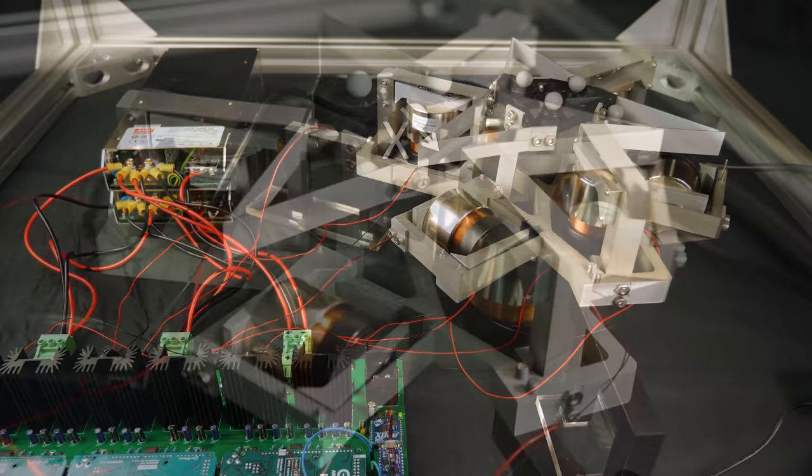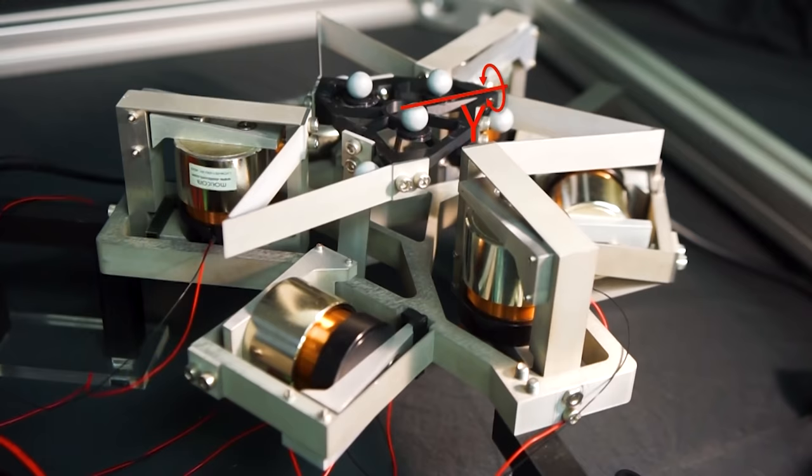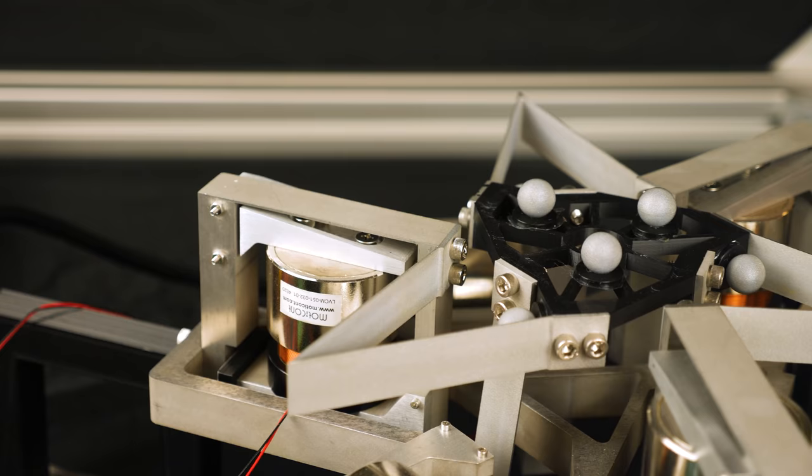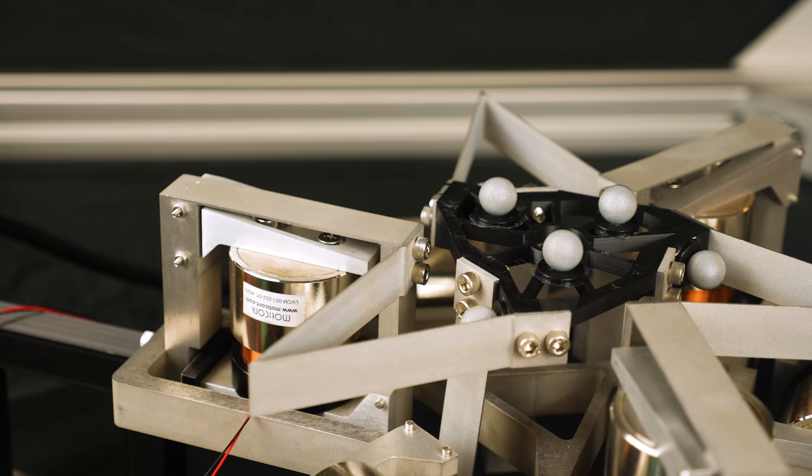This is a flexure-based six-axis positioner called a hex blade. It utilizes bent blade flexures, also known as folded leaf spring flexures, to achieve six degrees of freedom: three orthogonal translations and three orthogonal rotations.